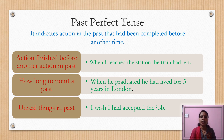For duration up to a point in the past — for example, 'When he graduated, he had lived for three years in London' — the action had continued up to that point, indicated by past perfect tense. For unreal things in the past — for example, 'I wish I had accepted the job' — since I am now jobless, I think I should have accepted it. This type of sentence is also used in conditional sentences, which we will discuss in later videos.